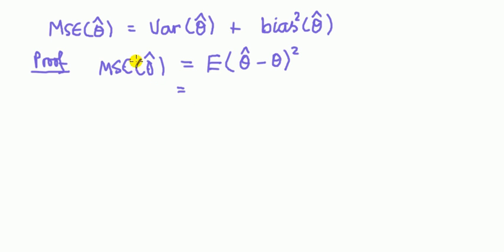Hi everyone, Phil from StatisticsMentor.com. Here's another proof that the mean squared error of an estimator equals the variance of an estimator plus the bias of the estimator squared.